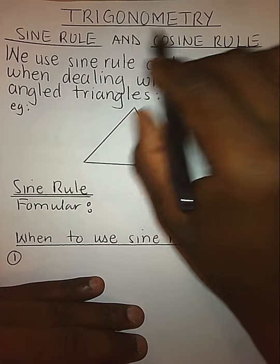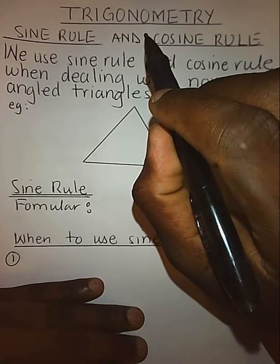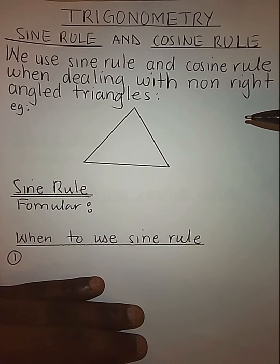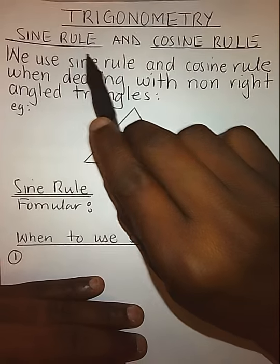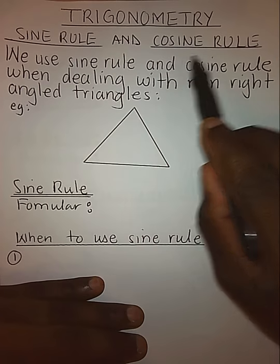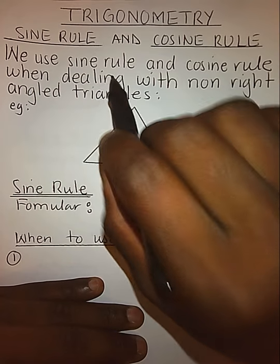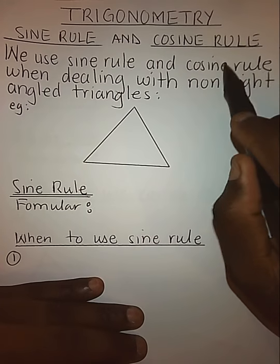Today we are looking at trigonometry, and we know very well that trigonometry is the study of triangles. Especially under triangles, we are mainly concentrating on finding the lengths of sides and the value of angles. Today we are specifically looking at the sine rule and cosine rule, which we use in non-right-angle triangles.